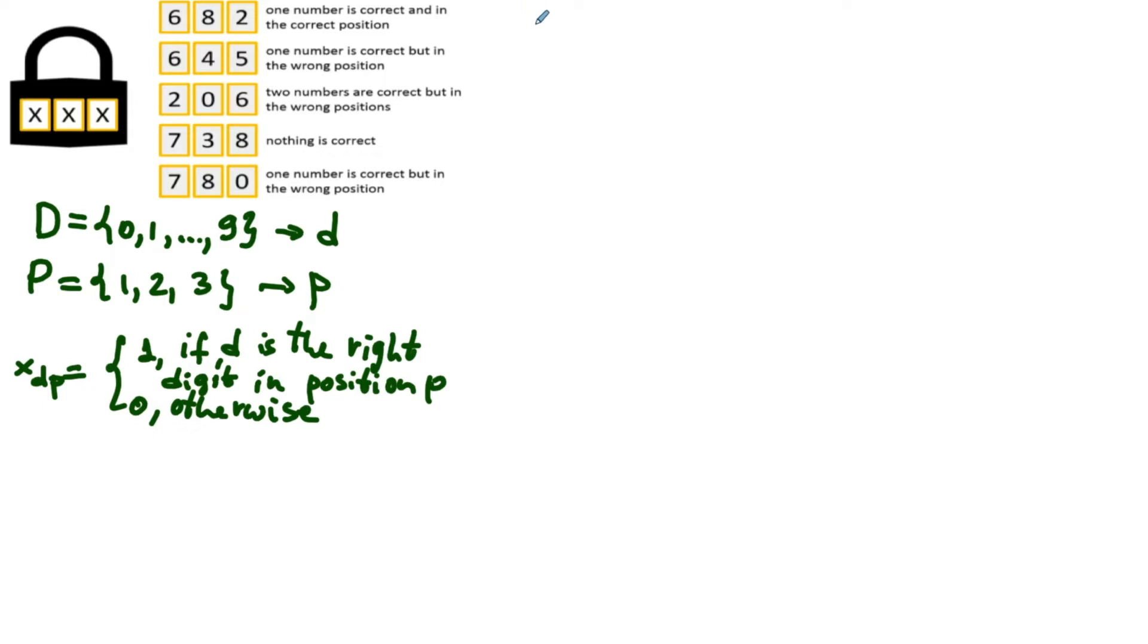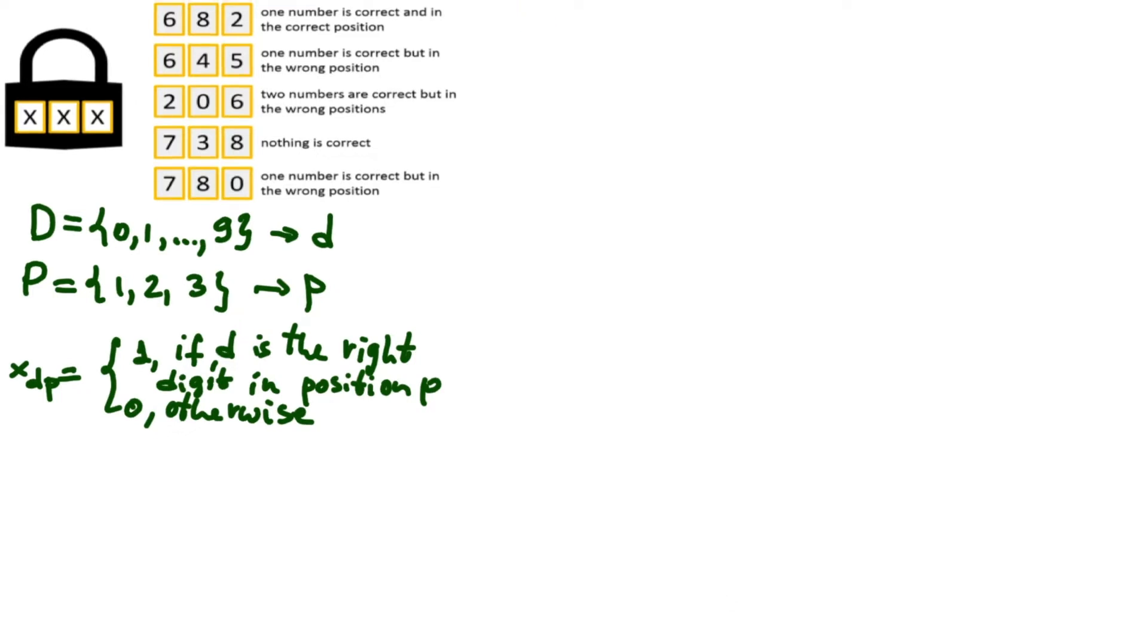Great. Then our objective is to maximize the number of correct digits in the right positions, and the puzzle will be solved only if that maximum is equal to three. So, the objective is to maximize the sum of all the variables then, right? Yes Max, you got it. Let's write down the constraints.